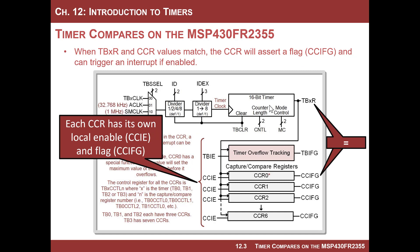Every single one of these compare registers has its own flag and its own enable, meaning every one of them can generate an interrupt when the counter equals the value stored in it. You can also change the value dynamically during the program. The theory of operation is: put a value in the register, and when the timer gets to that value it will assert the flag. You can then have that trigger an interrupt by enabling the local interrupt and the global interrupt, and then have an interrupt service routine take action.